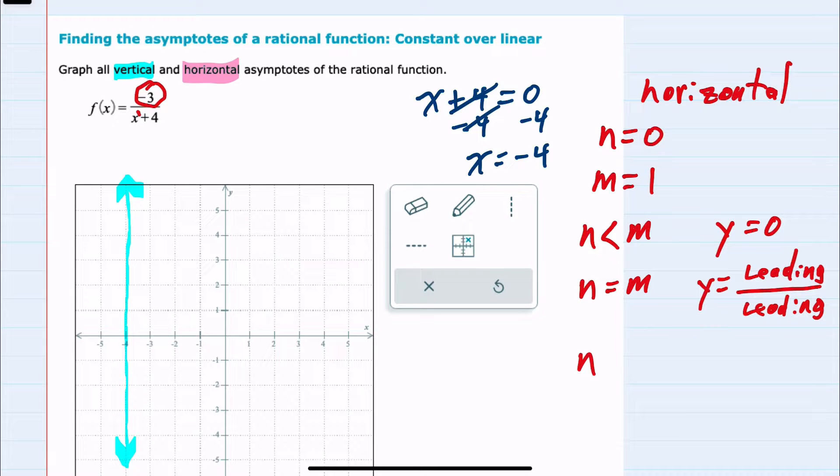And then the other possibility is that the degree of the top is greater than the degree of the bottom, and this would mean that there is not an asymptote.